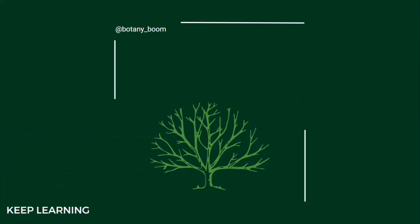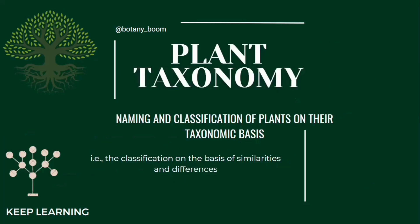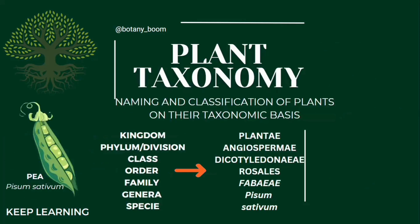Plant Taxonomy is the naming and classification of plants on their taxonomy basis, that is the classification on the basis of similarities and differences. The taxonomy classification for plants is represented here.